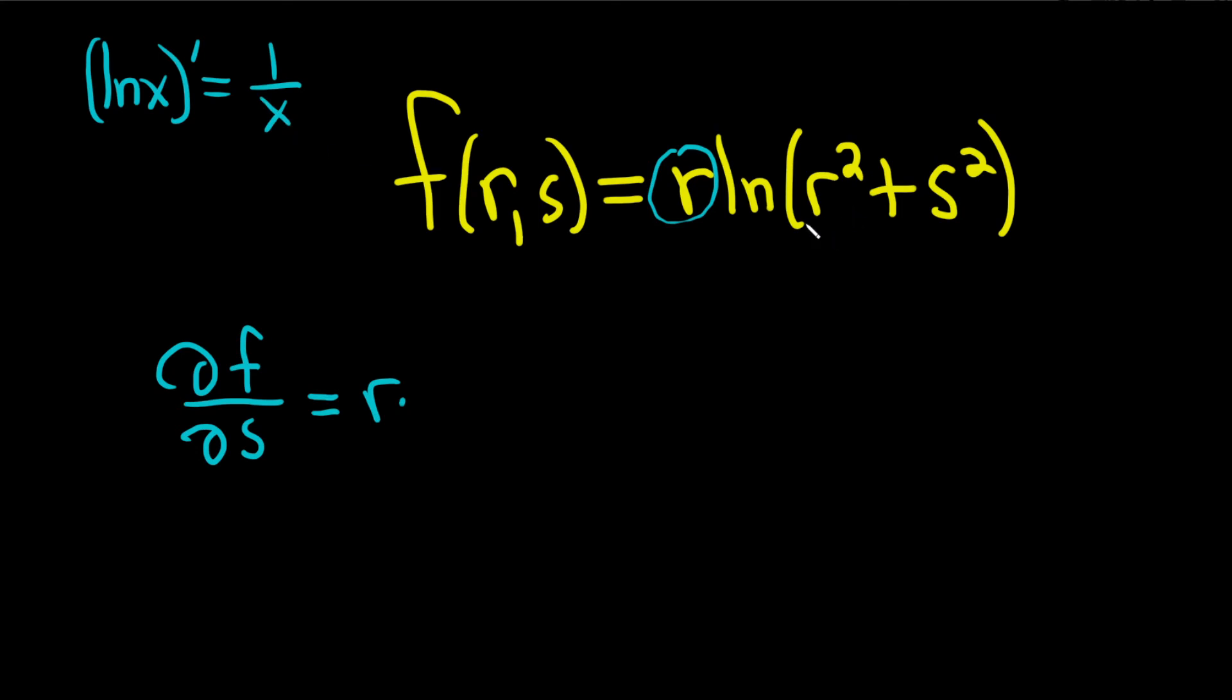So here, it'll be 1 over all of this stuff. So 1 over r squared plus s squared, and then times the derivative of the inside.